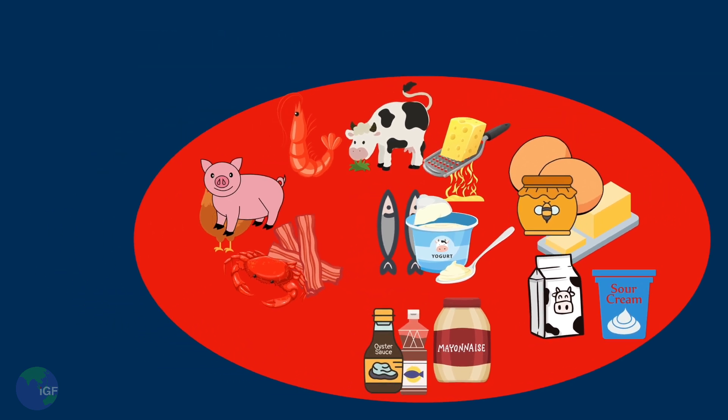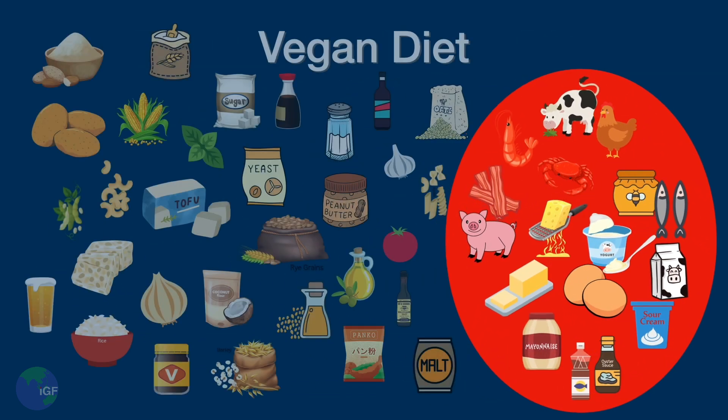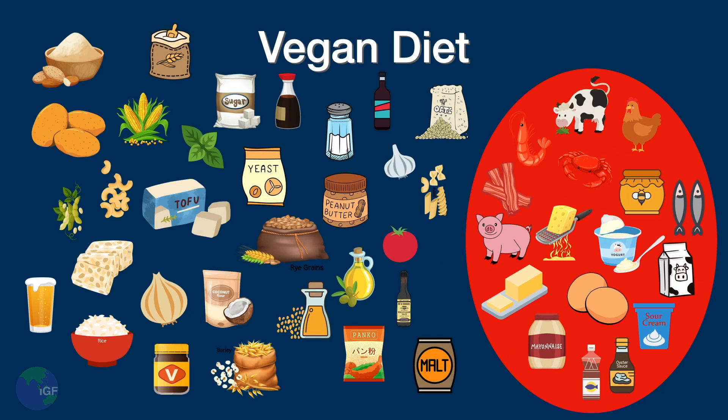In a plant-based diet, gluten is a common substitute for meat, and nuts are commonly used to replace dairy.